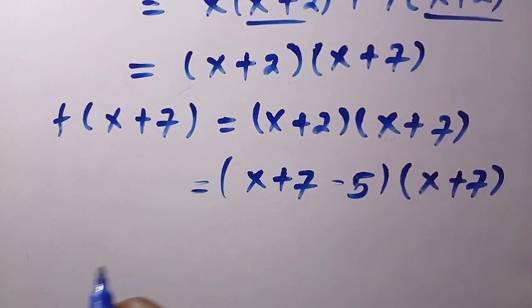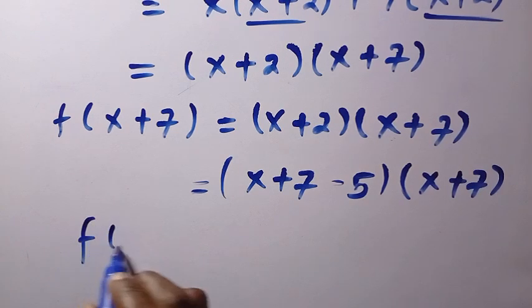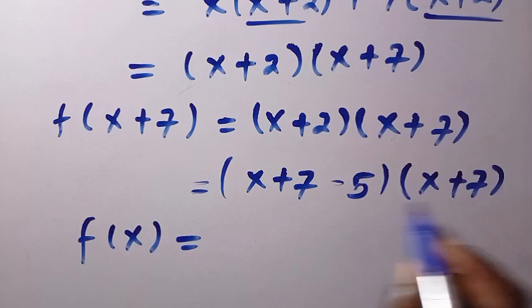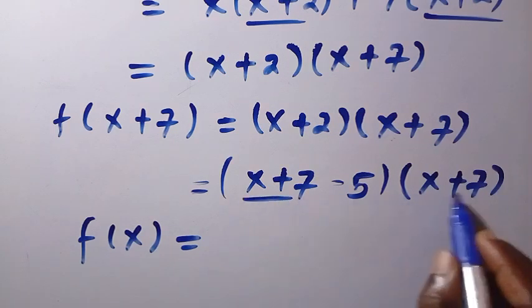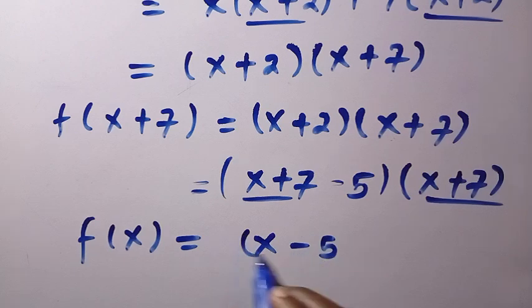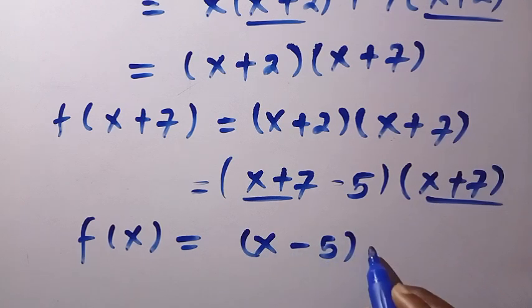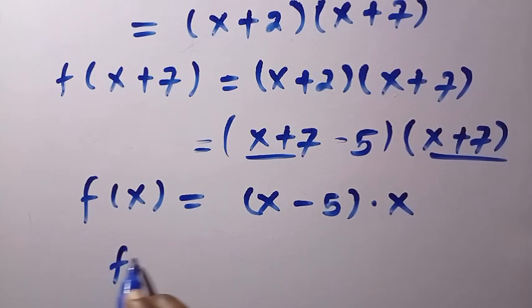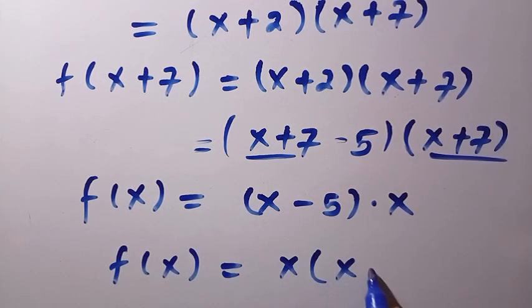After getting this, let's replace x plus 7 with x. As we have f of x equals, x plus 7 here has changed to this and this has changed to x. But this is still having minus 5. Then multiply by x. By expanding further, we have f of x equals x into bracket of x minus 5.